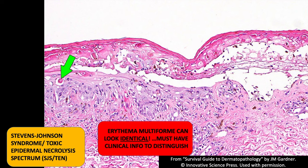Erythema multiforme can look identical — it can have areas with full-thickness necrosis. There's no way microscopically to determine if something is erythema multiforme or SJS-TEN; you have to know the clinical extent of the disease. All I can report is interface dermatitis with full-thickness necrosis and a blister. This matters because erythema multiforme is relatively indolent and self-limited, while SJS-TEN can put someone in a burn unit and potentially be fatal, particularly at the TEN end of the spectrum. I have a separate video about SJS-TEN on my YouTube channel.